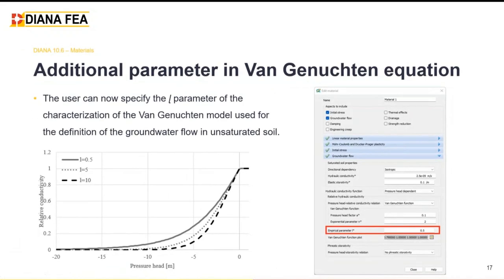For soil analysis, we also made available a new parameter called the L-parameter for the Van Genuchten equation, discussed in several scientific papers and available in other commercial software. In Diana this parameter has a default value of 0.5 — the typical value used by most practitioners — but the user can change and tune it to adjust the relative conductivity of the soil with respect to the pressure head.